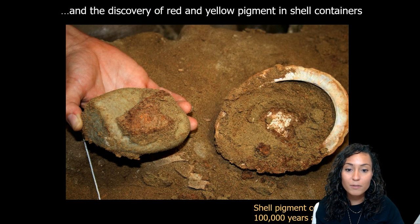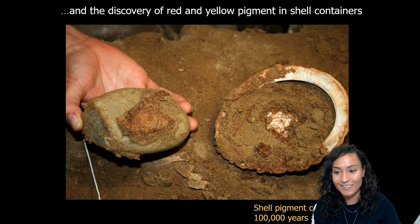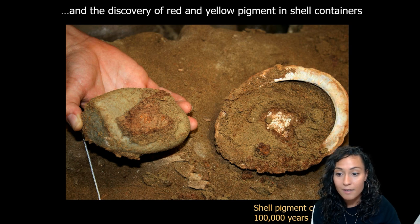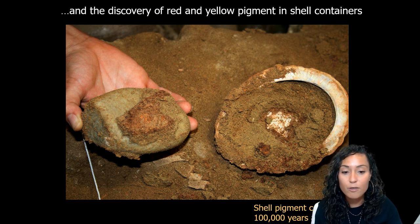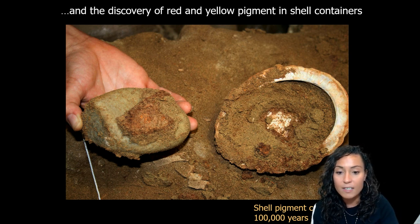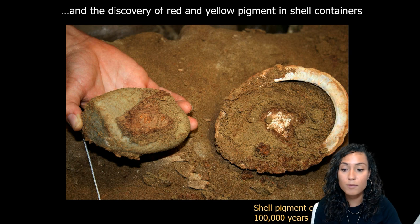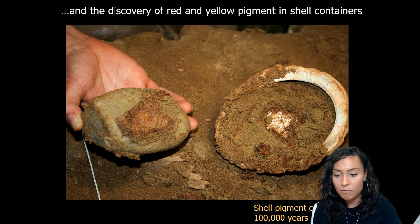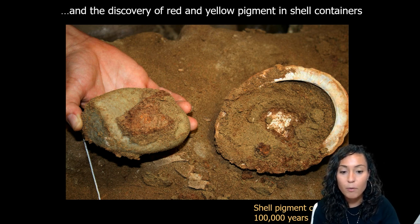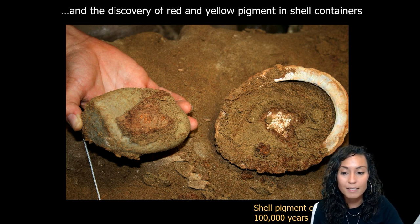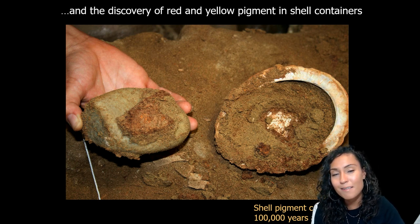The use of ochre at Blombos has been pushed back to 100,000 years, making symbolic use of red paint even more ancient than originally thought. In 2011, archaeologists found red and yellow pigment within shell containers, along with grinding cobbles and bone spatulas used to work up a paste applied to rock — chemical analysis strongly points to paint production. The ochre may have been used to paint bodies, animal skins, or cave walls. All of these artifacts at Blombos point to a sophisticated symbolic system linked to ritual beliefs, which we'll dive deeper into in lecture 2.3.